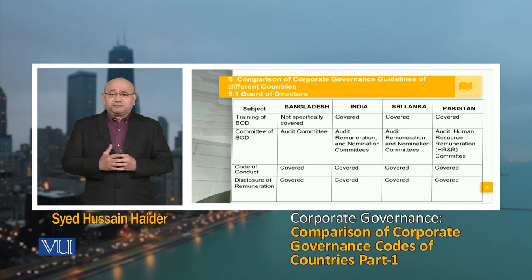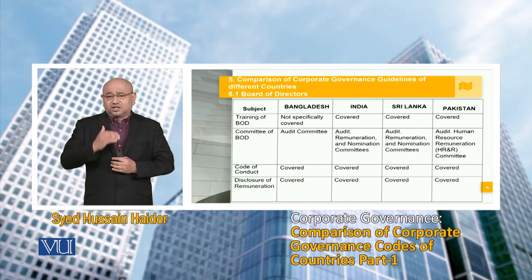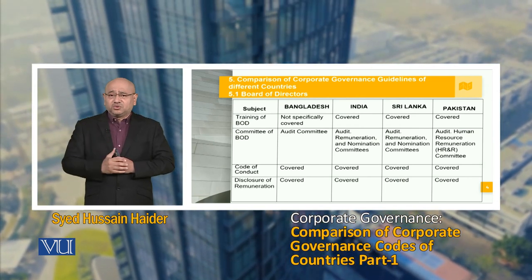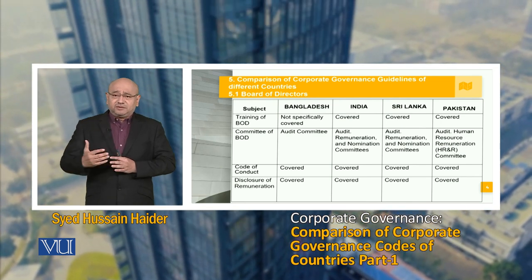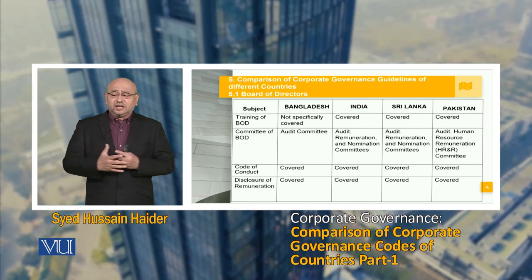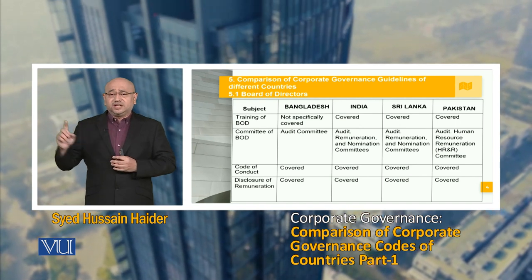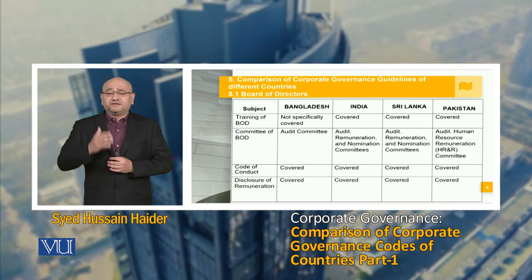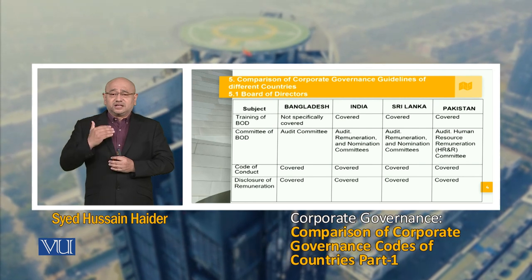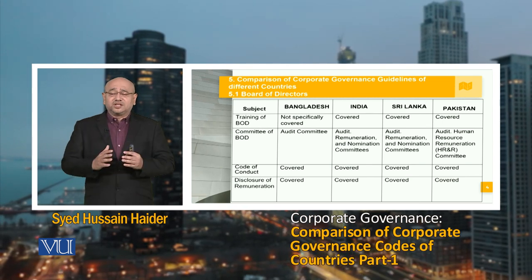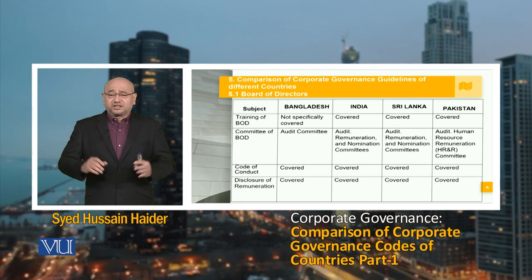Talking about the committees of the BOD, in Bangladesh the compulsory committee is the audit committee. In India, it is the audit, remuneration and nomination committee — three different committees. In Sri Lanka also, we see there is the audit, remuneration and nomination committees. And in Pakistan, we have the audit and human resource remuneration committee. So there are different types of committees, but there is one similarity across all four countries, and that is the audit committee. It is a very, very important committee to ensure that the guidelines of corporate governance are properly materialized and implemented within the organization, and the board of directors have an oversight on it.